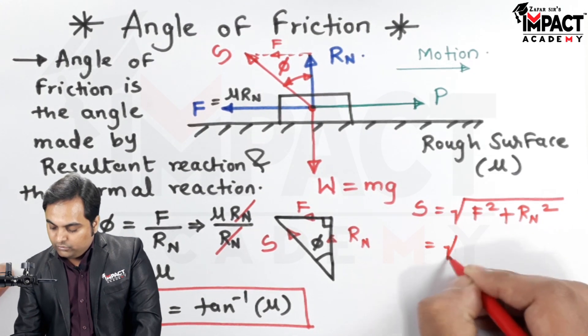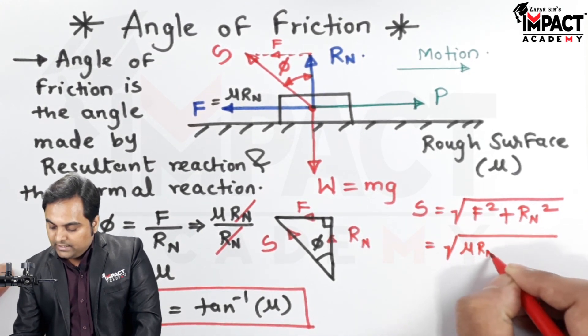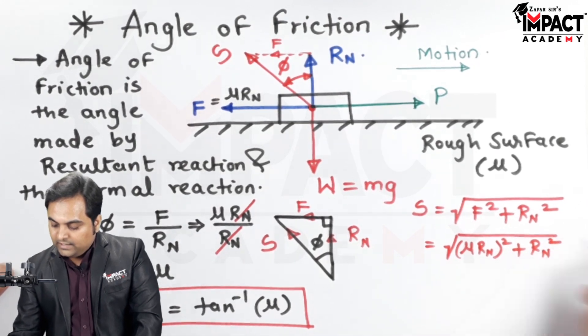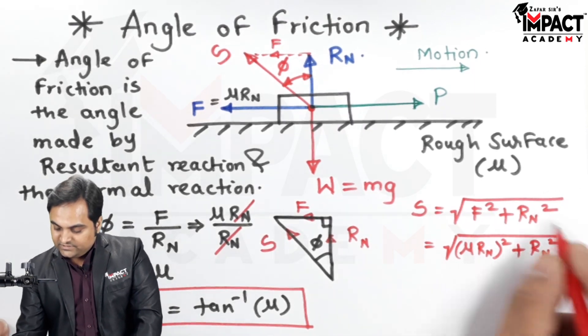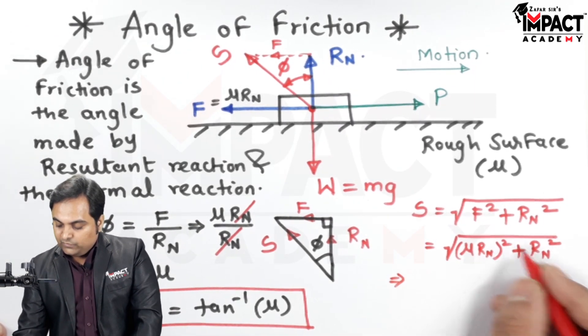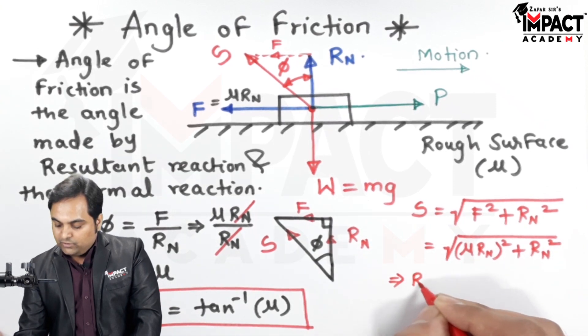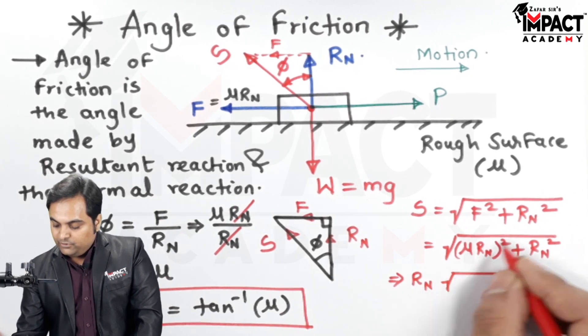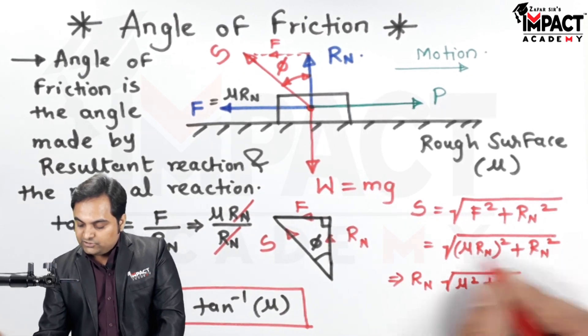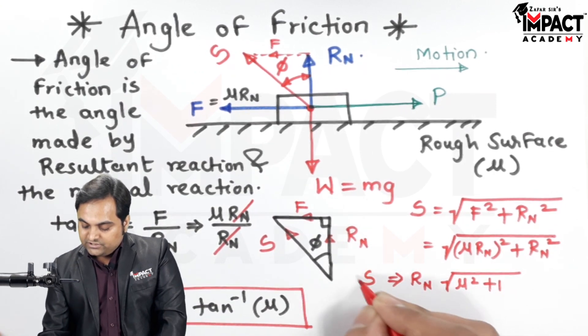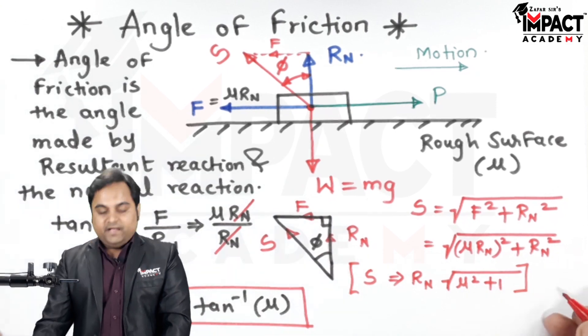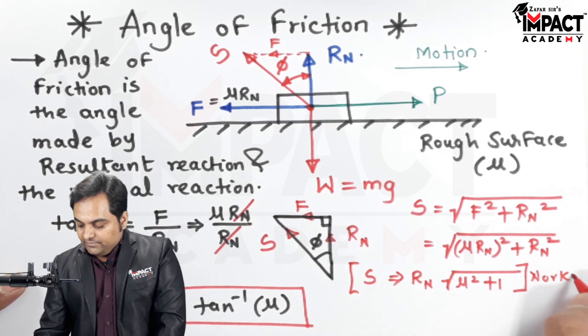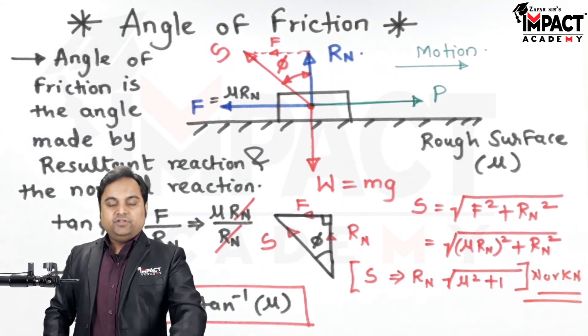So F we know it is mu Rn and it is whole square plus Rn square, then this is by Pythagoras theorem. Now Rn square would be taken common so outside the root sign it will become Rn into the root sign we have mu square plus 1 because Rn has been taken outside. So this is the formula to calculate the resultant reaction and since it is a reaction the unit can be either in terms of Newton or it can be in terms of kilo Newton. So in short here in this video we have seen what is meant by angle of friction.